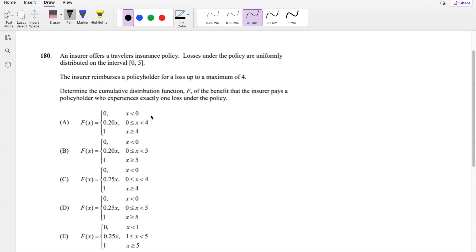Okay, let's just dive right in. So if a loss is uniformly distributed, this is going to be a probability distribution function of 1 over B minus A, where B is the upper limit and A is the lower limit, so that's 1 over 5 minus 0, so that's 1 fifth.